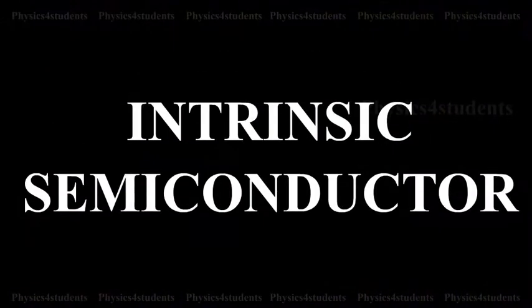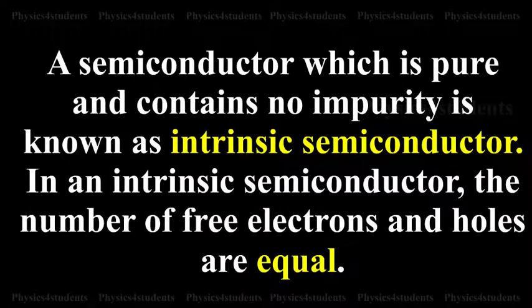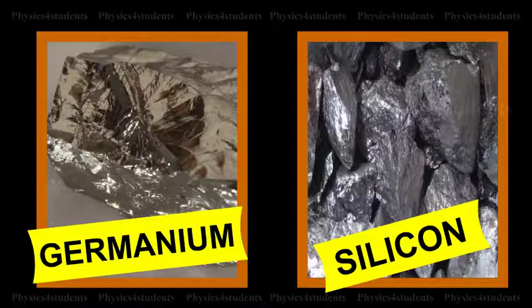Intrinsic Semiconductor. A semiconductor which is pure and contains no impurity is known as an intrinsic semiconductor. In an intrinsic semiconductor, the number of free electrons and holes are equal. Common examples of intrinsic semiconductors are pure germanium and silicon.